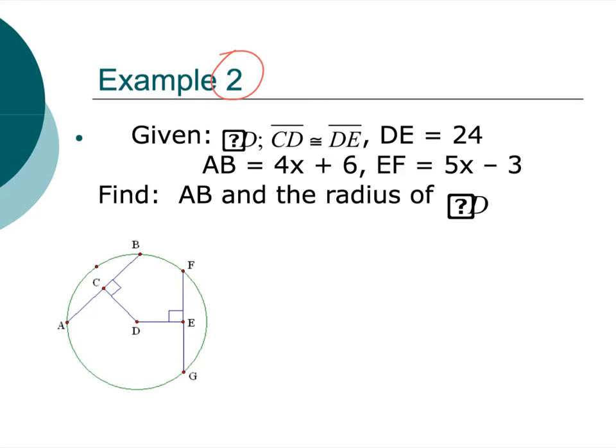All right. So we've got circle D. We've got DC is congruent to DE. So those two guys are congruent. I've got DE is 24. So I know that CD is 24, right? AB is 4x plus 6. And I've got EF, not the whole thing, EF, just the half, is 5x minus 3. And we want to find AB, so the whole length. And I want to figure out what the radius of circle D. All right. Those should be circles, not question marks in a box. Sometimes the import does not happen so wonderfully.